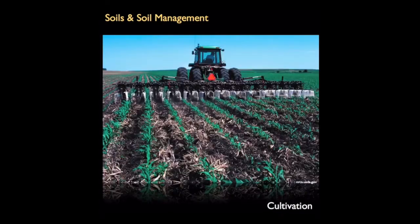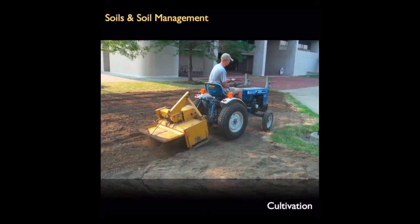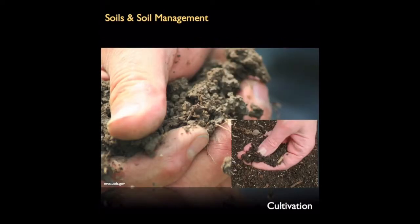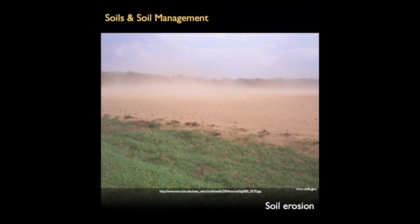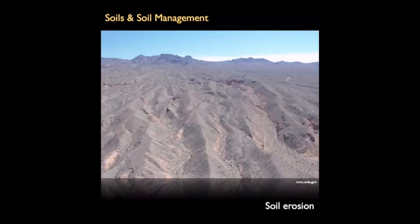Cultivation removes existing vegetation, including the roots that tend to hold soil together, and exposes the soil surface. Cultivation results in a finer structure or tilth that is good for plant growth. However, the fine tilth is more easily displaced by wind or water than undisturbed soil. Cultivation also reduces soil organic matter over time, and this reduces aggregate stability. Cultivation is most likely to promote soil erosion in arid and semi-arid regions.